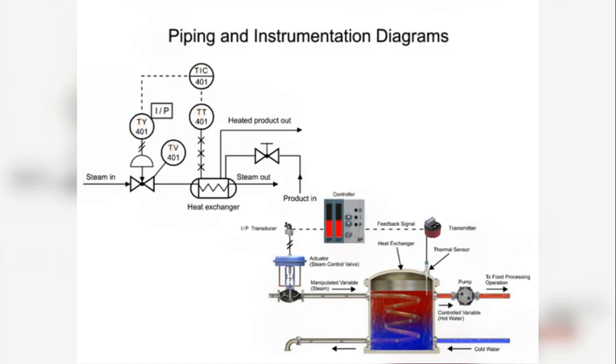The instrument connected to the heat exchanger contains two other types of information. The second letter in the functional identifier indicates it is a transmitter, and the balloon with no line inside its symbol indicates the device is field mounted.